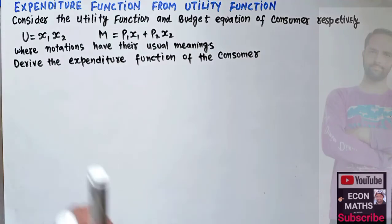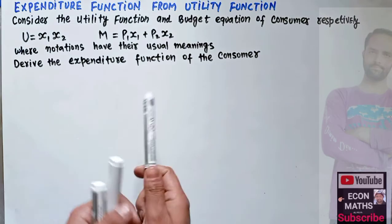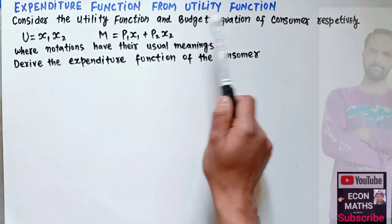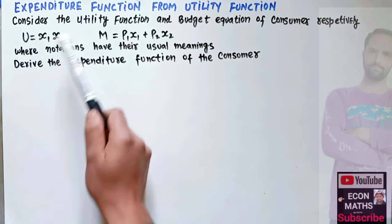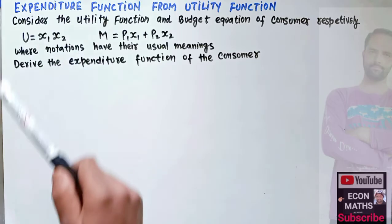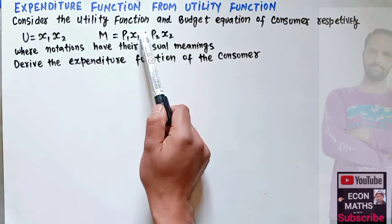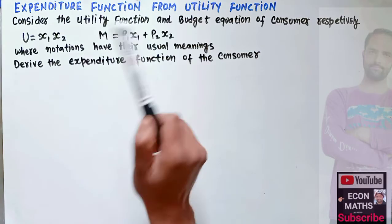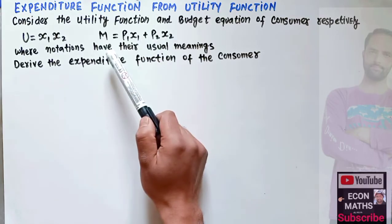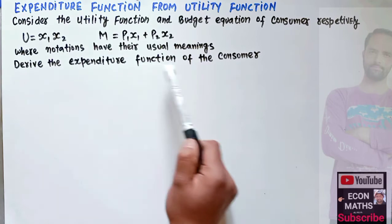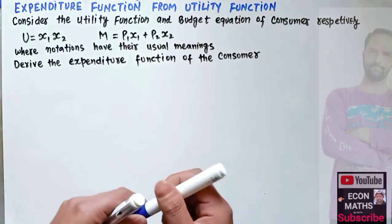In this video we will learn how to derive the expenditure function from the given utility function and budget equation. The question is: consider the utility function and budget equation of the consumer respectively. u = x1 times x2, where x1 and x2 are the two goods, m denotes the budget of the consumer, equal to p1 times x1 plus p2 times x2. We have to derive the expenditure function of the consumer.